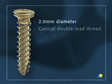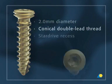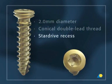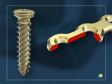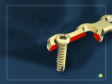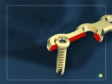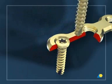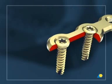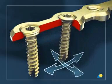The 2.0 mm locking screw has a threaded screw head. In this exercise, a screw with a star drive recess is used, although a cruciform version is available. The locking plate has a corresponding threaded plate hole. During insertion, the locking screw engages and locks into the threaded plate hole. If necessary, the threaded plate hole also accepts non-locking screws, which permit greater angulation.